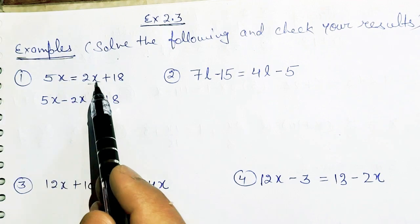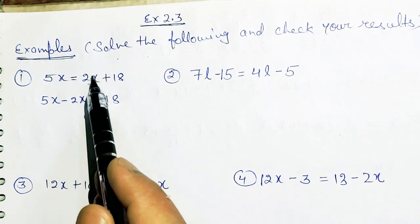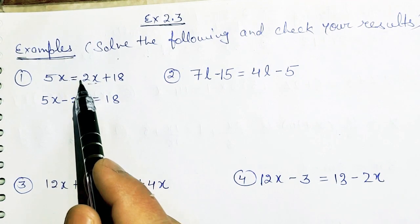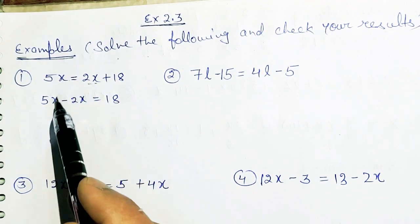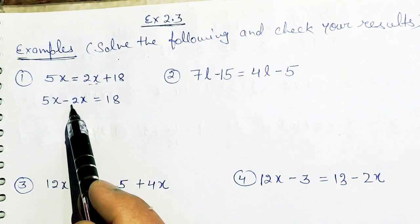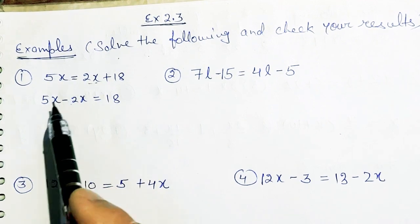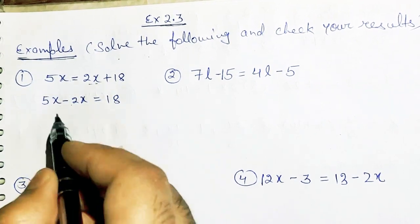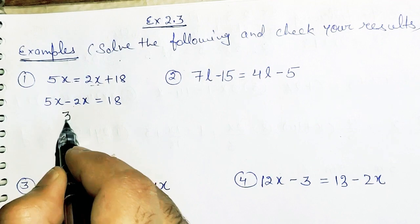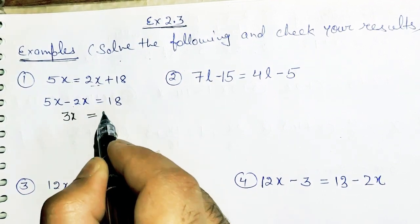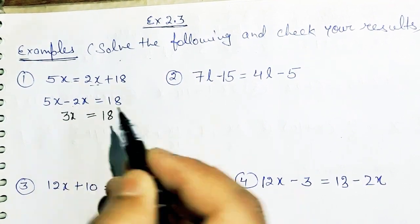So by the transposing method, 2x is in plus on the RHS, it will move to the LHS as minus. So 5x minus 2x equals 3x, which equals 18.